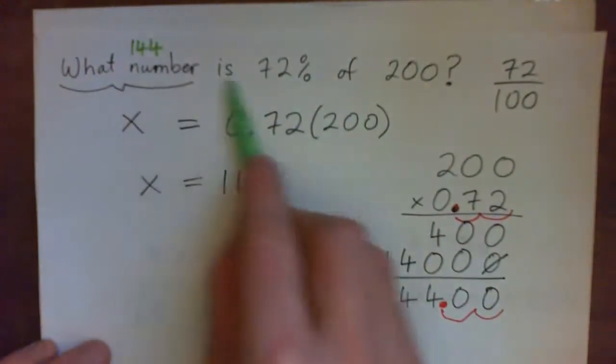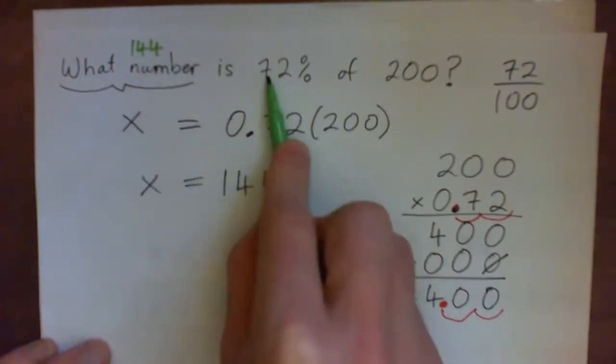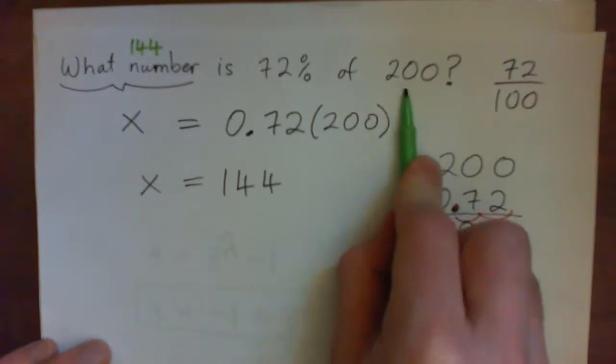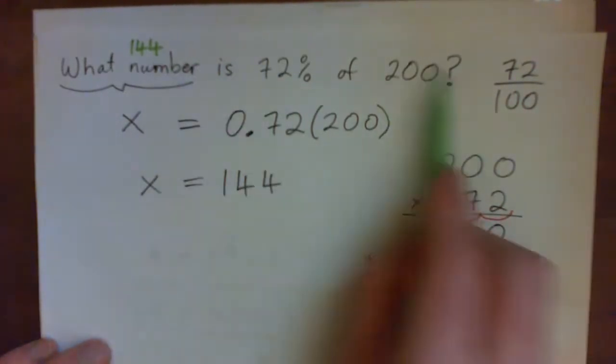So instead of what number is 72% of, it's 144 is 72% of 200. Does that make sense to you? Think about it. Does that seem like a reasonable answer?